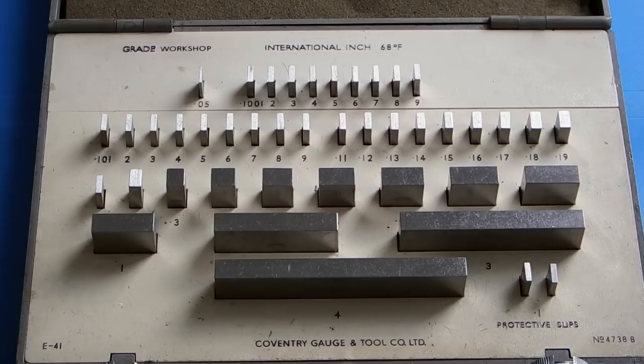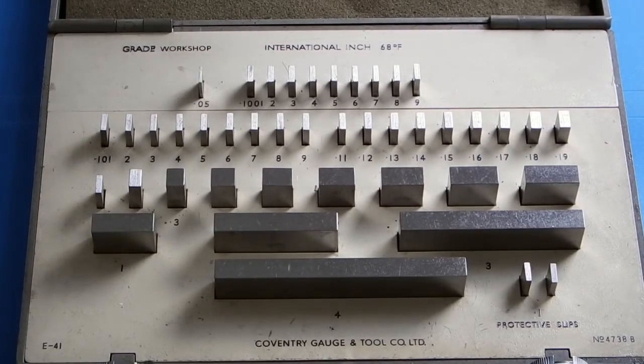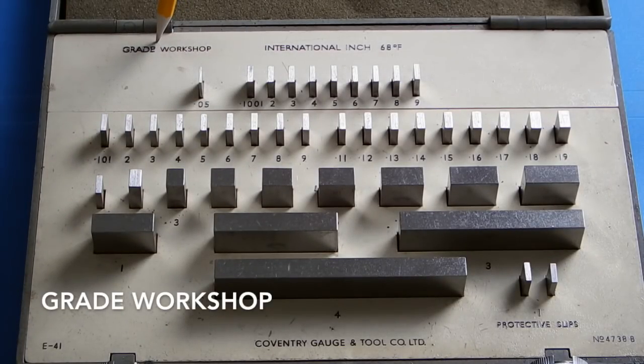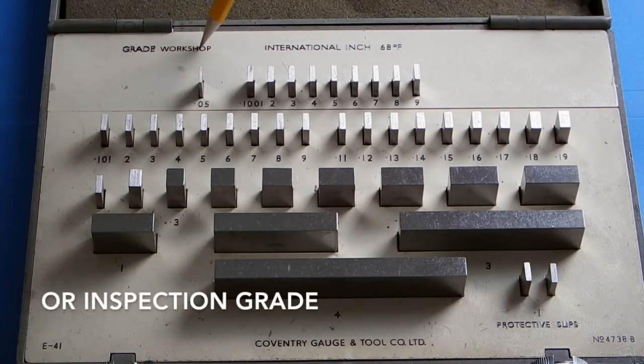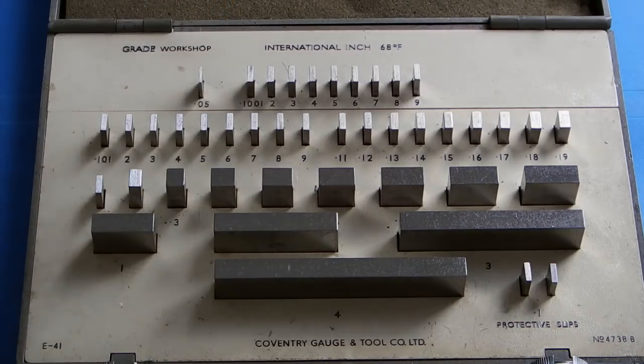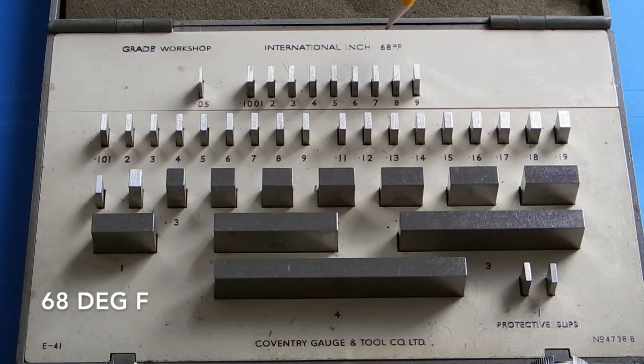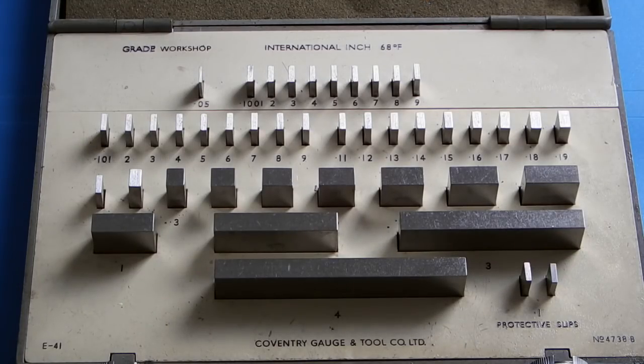There are different types of gauge blocks depending on the accuracy of the set and the accuracy needed. This set, if you look here, it says grade for workshop. You can also get an inspection grade. It says international inch, obviously they're in inches, and it's got here a temperature of 68 degrees Fahrenheit. What that means is when these are 68 degrees Fahrenheit, that is the temperature to give you the correct size.